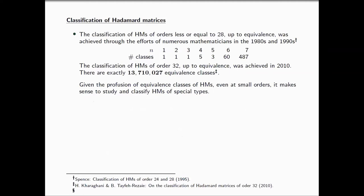Hadamard matrices have been classified up to orders less than or equal to 28 up to equivalence through efforts of numerous mathematicians in the 80s and 90s, and we also have the classification of Hadamard matrices of order 32 up to equivalence. This was achieved in 2010, and there are exactly 30,710,027 equivalence classes. We observe a combinatorial explosion at this point. Given the profusion of Hadamard matrices, even at small orders, it makes sense to study and classify Hadamard matrices with special types.